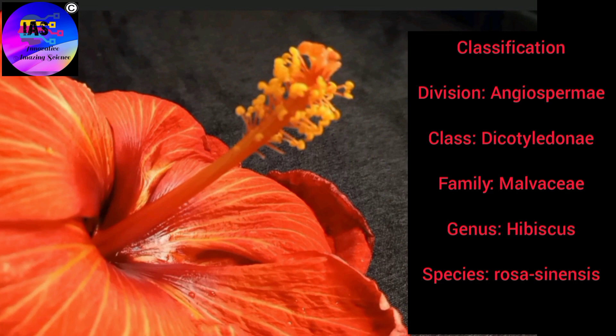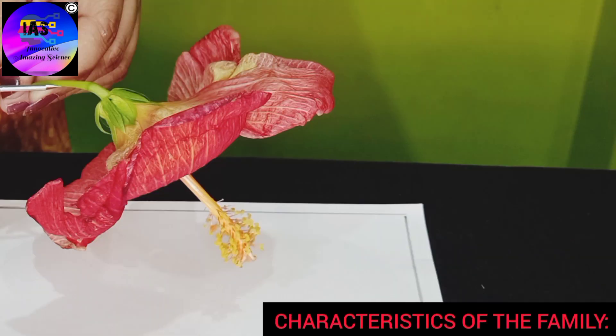As I grew up and started studying, I learned that flowers can have many different parts and those parts have different functions as well. So let's enjoy the video and study about a particular type of flower in detail. Are you ready? Let's get started! First, let us understand the classification: it belongs to division Angiospermia, class Dicotyledonae, family Malvaceae, genus Hibiscus, and species Rosa-sinensis.